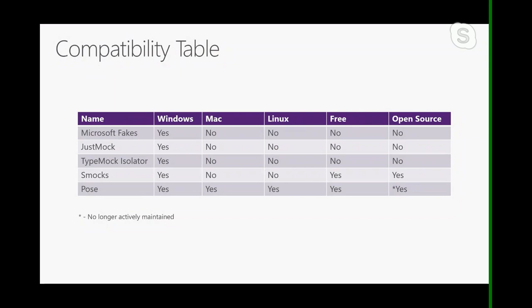Isolation frameworks are kind of controversial. The first on the scene was Microsoft Fakes, created by Microsoft. Then there are proprietary tools like JustMock and TypeMock Isolator — all pretty much .NET Framework only and Windows by extension. Smocks and Pose are open source and free, however Smocks is Windows-only. Pose is actually cross-platform and is a product of my creation, but I no longer actively maintain it, so I wouldn't advise anyone to use it. So we're kind of limited to Windows for now for static class mocking.